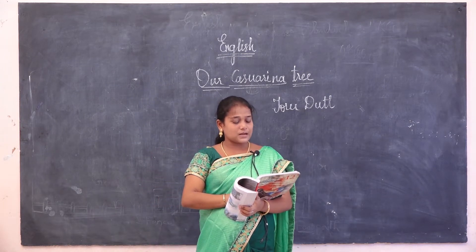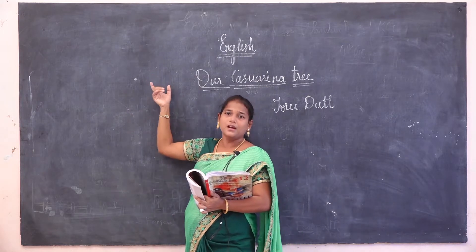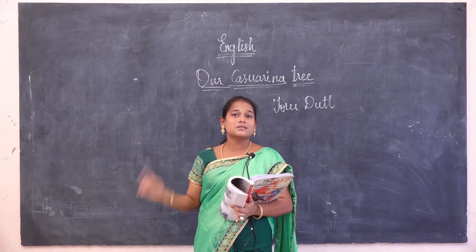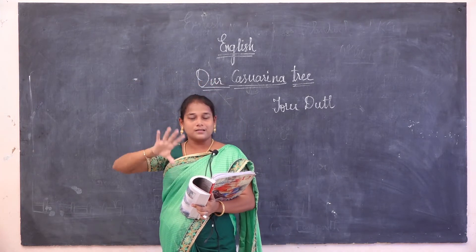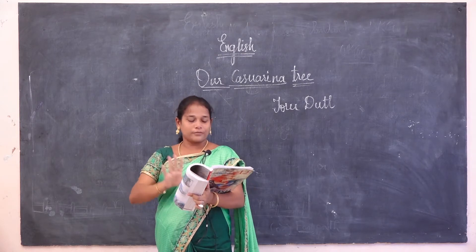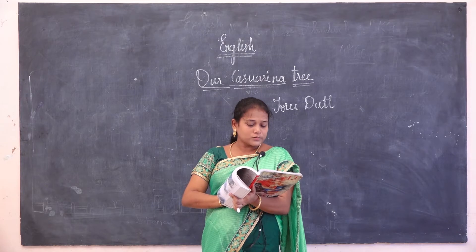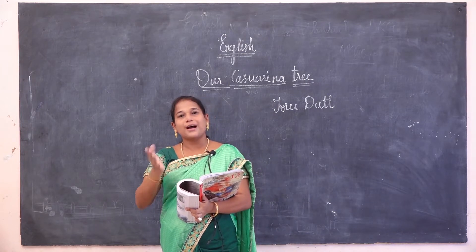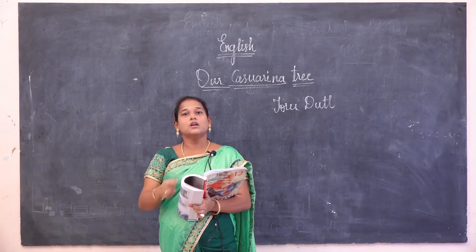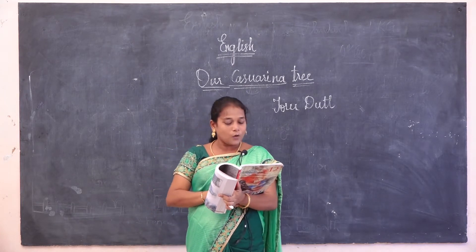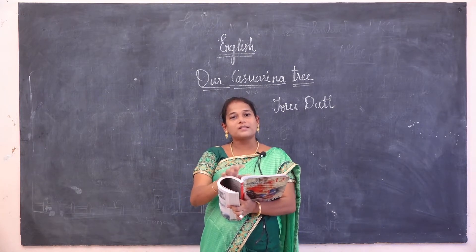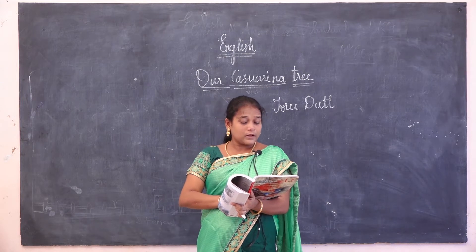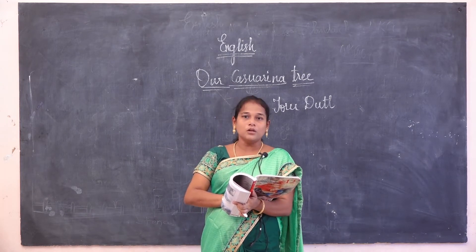'Up to its very summit near the stars' — summit represents the top, like a mountain peak. The creeper climbs the tree up to the very summit near the stars, meaning it is reaching to the sky, describing the height of the tree. 'A creeper climbs in those embrace bound — no other tree could live.' Apart from this Casuarina tree, no other tree could survive, because that creeper is so huge in size with a tight hold.